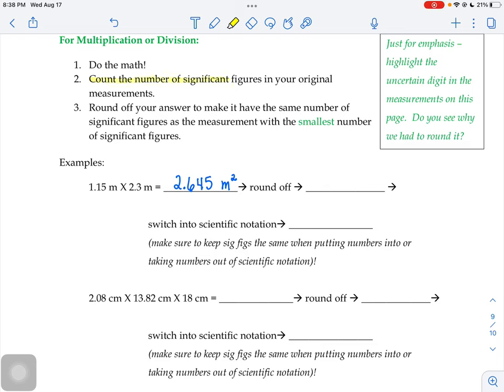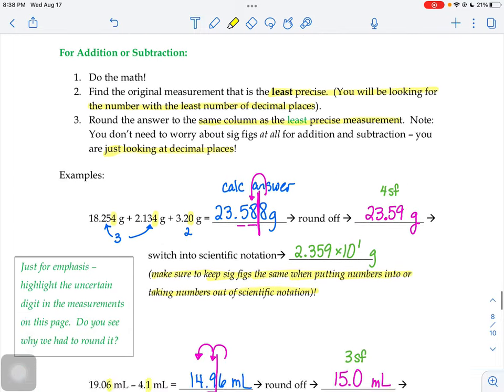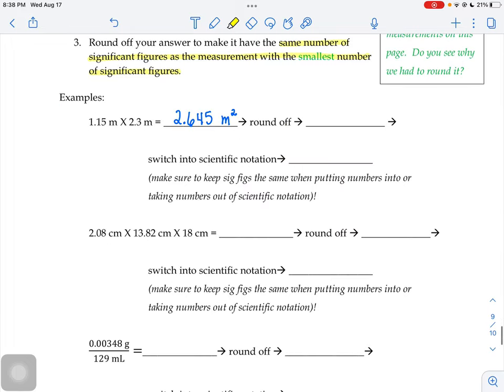So what are we going to do this time with multiplication and division? This time we're going to count the number of sig figs in our original measurements and then round the answer to make it have the same number of sig figs as the measurement with the smallest number of sig figs. So addition and subtraction, that guy we were looking at decimal places. Now we're looking at sig figs to help us to decide. So if I count the sig figs in my length and width dimensions, 1.15 has 3 sig figs. 2.3 only has 2 sig figs.